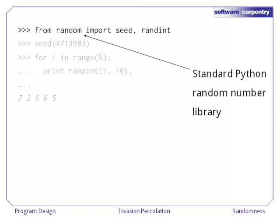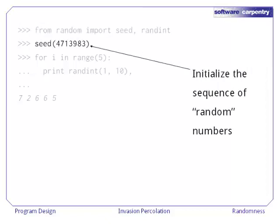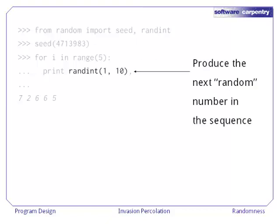The first step is to import functions from the standard Python random number library, called, unsurprisingly, random. We then initialize the sequence of random numbers we're going to generate, and you'll see in a moment why there are quotes around the word random. We can then call randint to produce the next random number in the sequence as many times as we want.